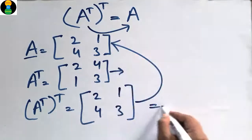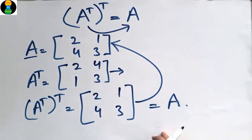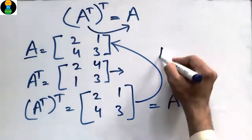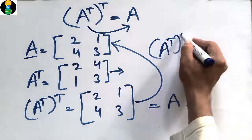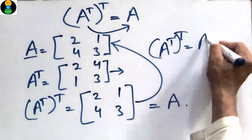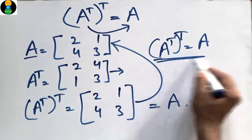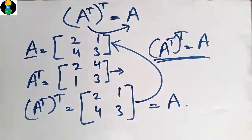So we prove the relation that taking the transpose of the transpose comes out to be the same matrix. A transpose transpose is equal to A. This is the relation which I prove - taking the transpose of any transpose is equal to the same matrix. Thank you for watching our video and don't forget to subscribe our channel for more videos.